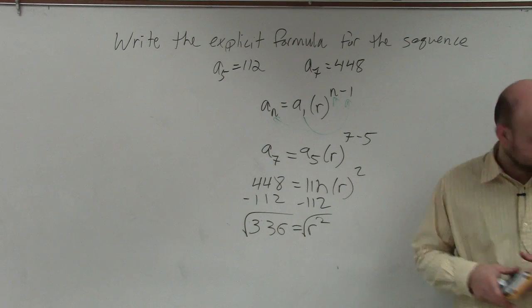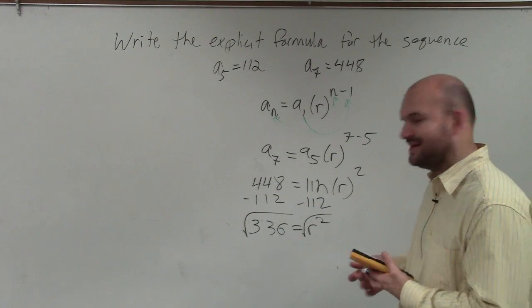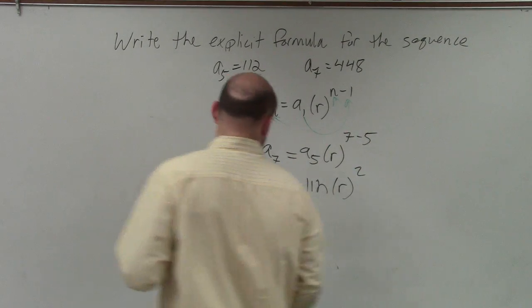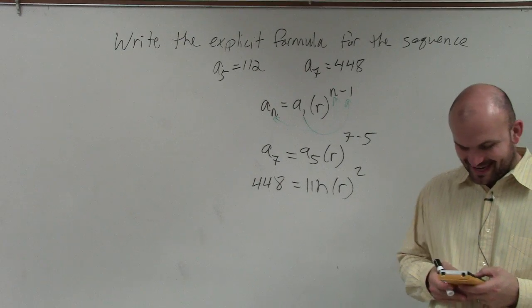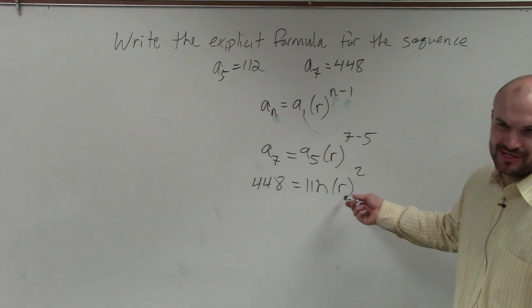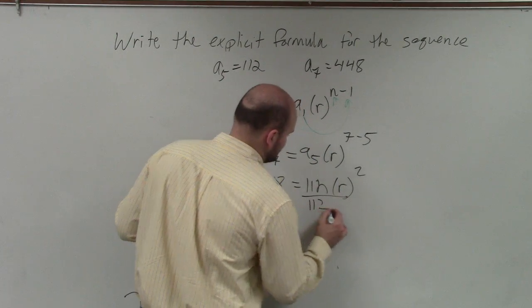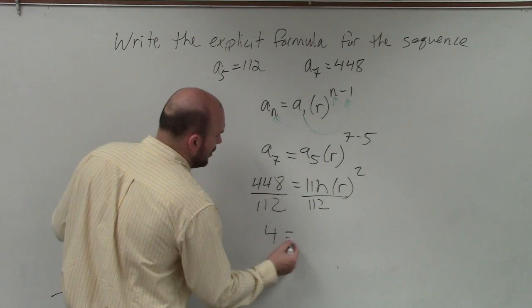That's not good. You have to divide 112 instead of subtraction. Oh, I'm an idiot. What am I doing? 448 divided by 112, because 112 is multiplying by the ratio. I don't know why I was subtracting either. So I have 4 equals r squared.